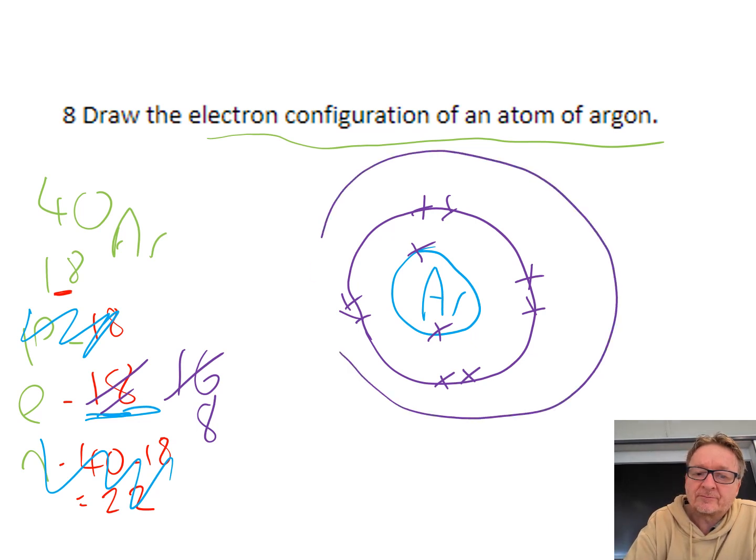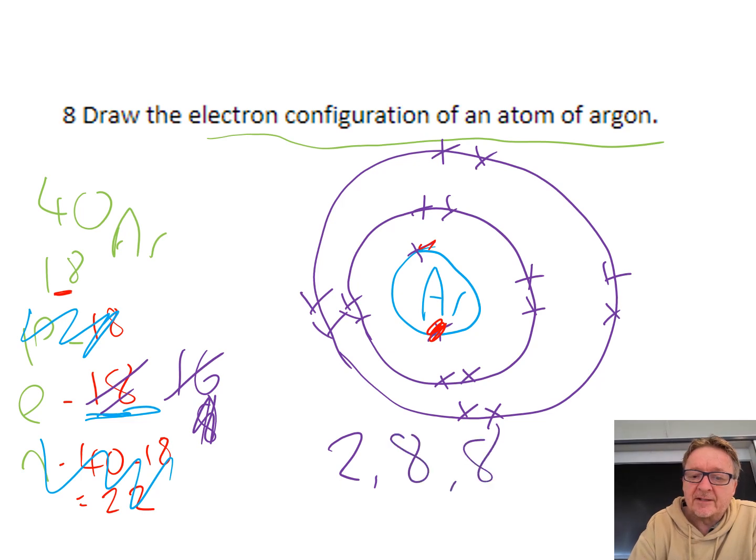As soon as that second shell is full with eight electrons, I draw another one. I've got eight left, so I go 1, 2, 3, 4, 5, 6, 7, 8. All the electrons are in, it's a full shell. So my electron configuration is 2, 8, 8.